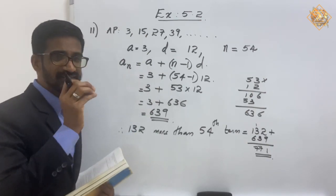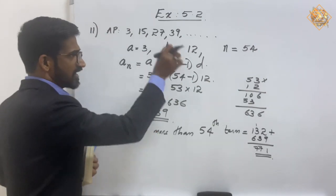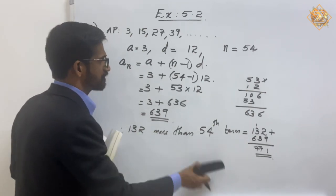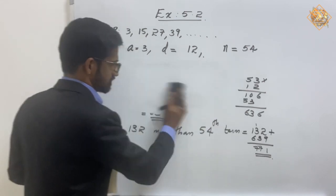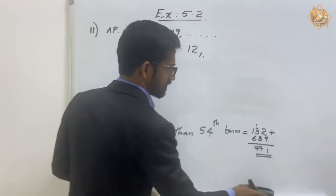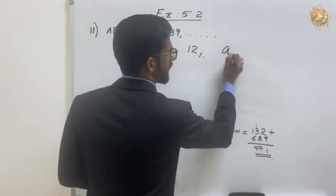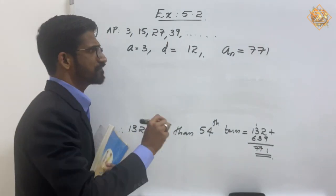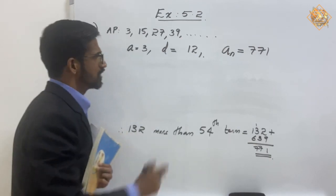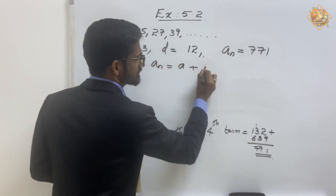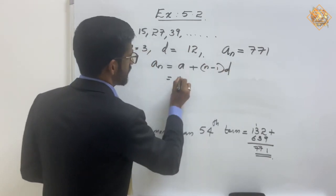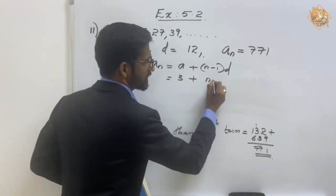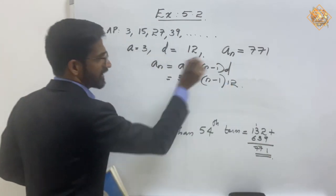Now we need to find which term of this AP is 771. The question is reduced to: which term of this AP equals 771? So we set an equal to 771 and substitute again into the formula an equals a plus (n minus 1) into d, where d is 12 and n is what we need to find.